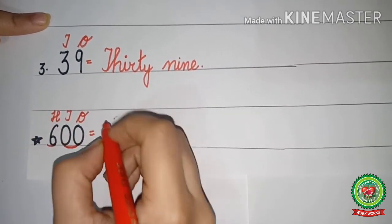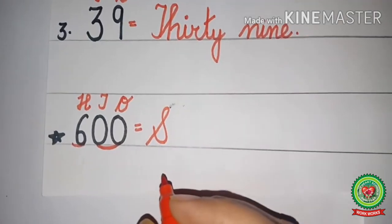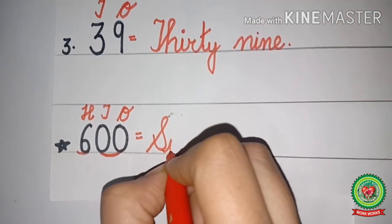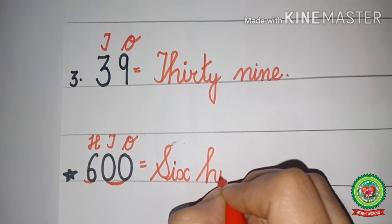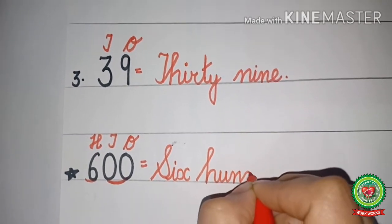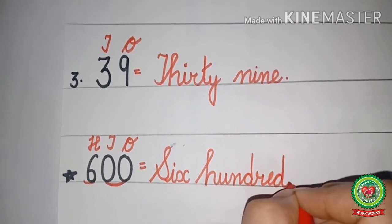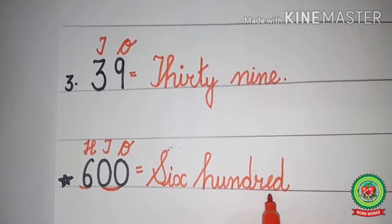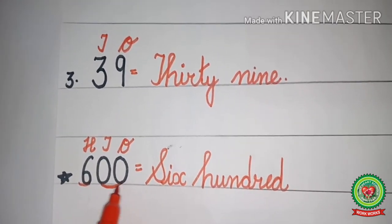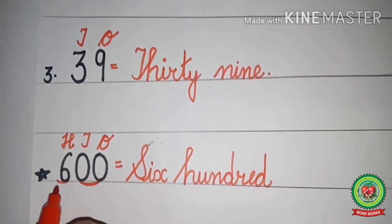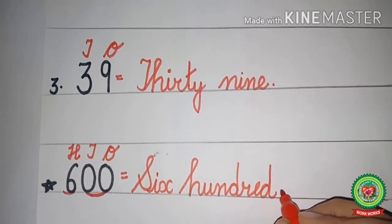Now what is under 100? 6. So we will write 6 - spell 6 with me: S-I-X. Now what is above 6? 100 is there. So we will write 100 - H-U-N-D-R-E-D. On 10s and 1s, 0 is there, and we will not write 0. So we will write six hundred. And at the end we will put a full stop.